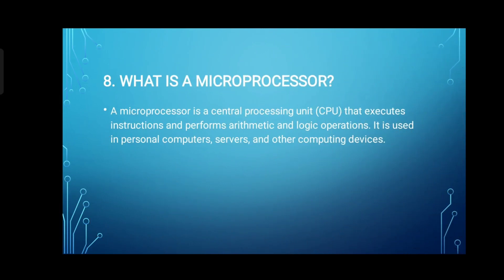8. What is a microprocessor? A microprocessor is a central processing unit (CPU) that executes instructions and performs arithmetic and logic operations. It is used in personal computers, servers, and other computing devices.